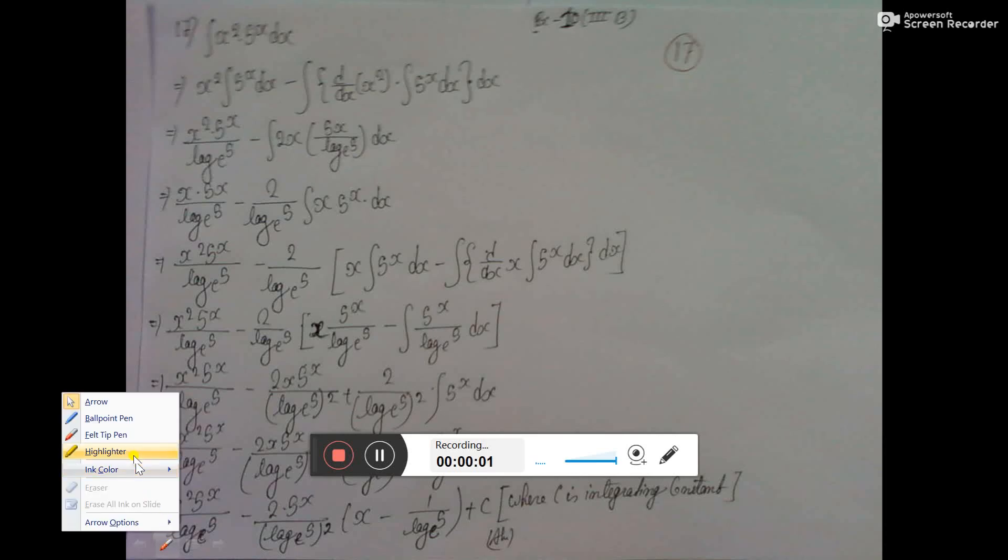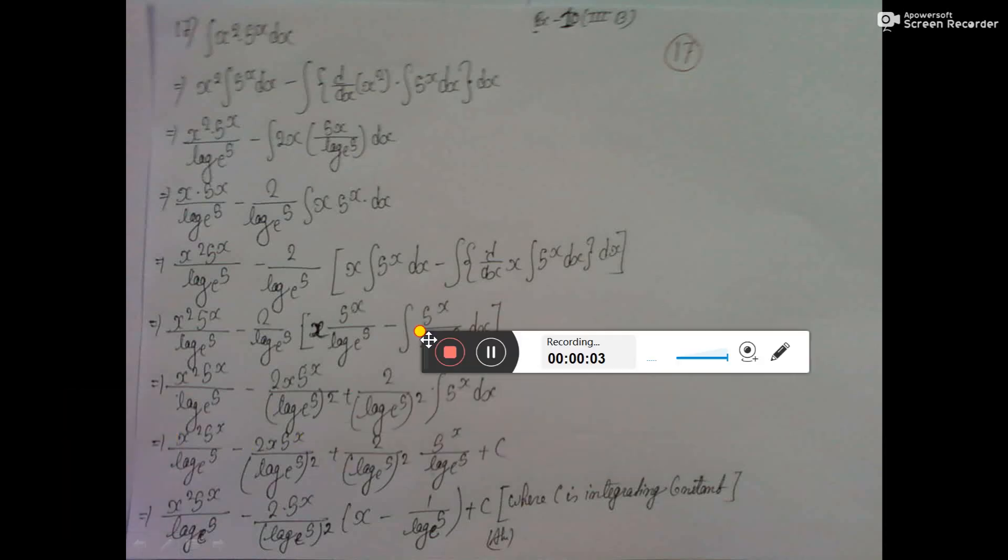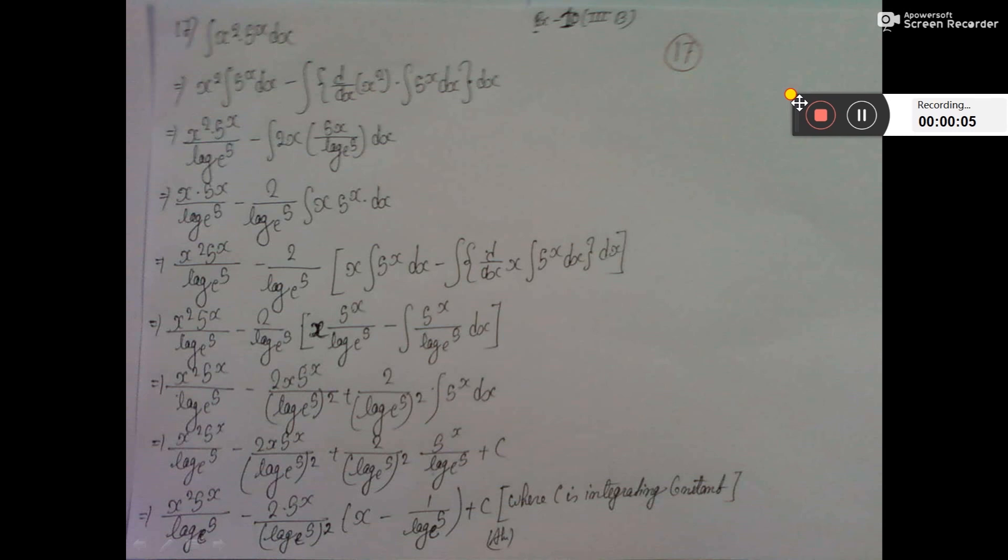The sum is x square 5 to the power x dx. This is x square 5 to the power x dx. So, LIATE - here we have exponent and algebra.